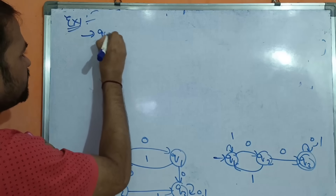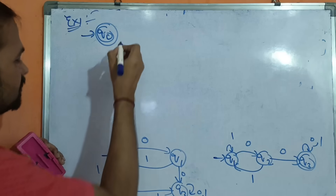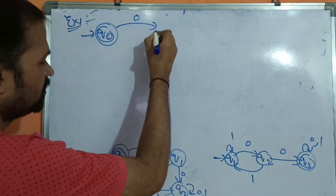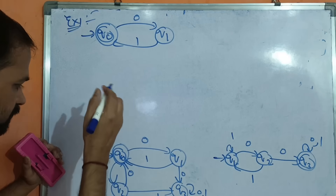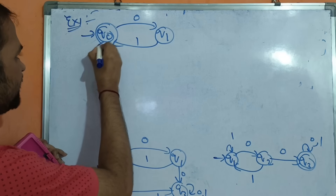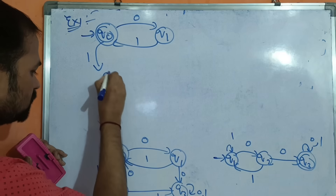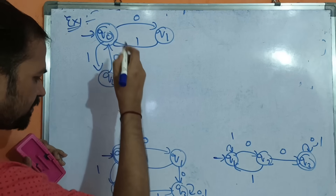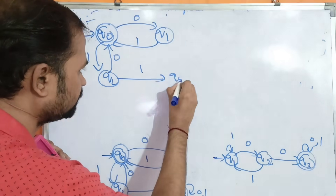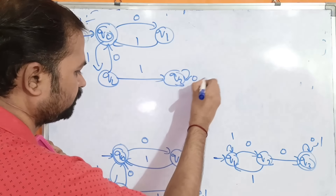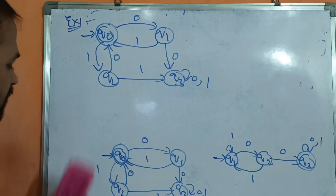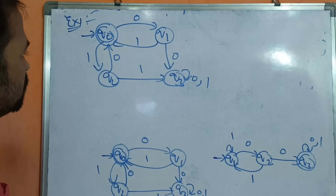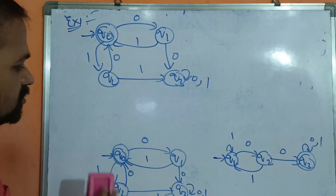In this example, Q0 is both the initial state and the final state. On input 0, Q0 moves to Q1; Q1 on 1 goes to Q0; Q0 on 1 goes to Q2; Q2 on 0 goes to Q0; Q2 on 1 goes to Q3; Q3 has a self-loop on 0 and 1; and Q1 on 0 goes to Q3.